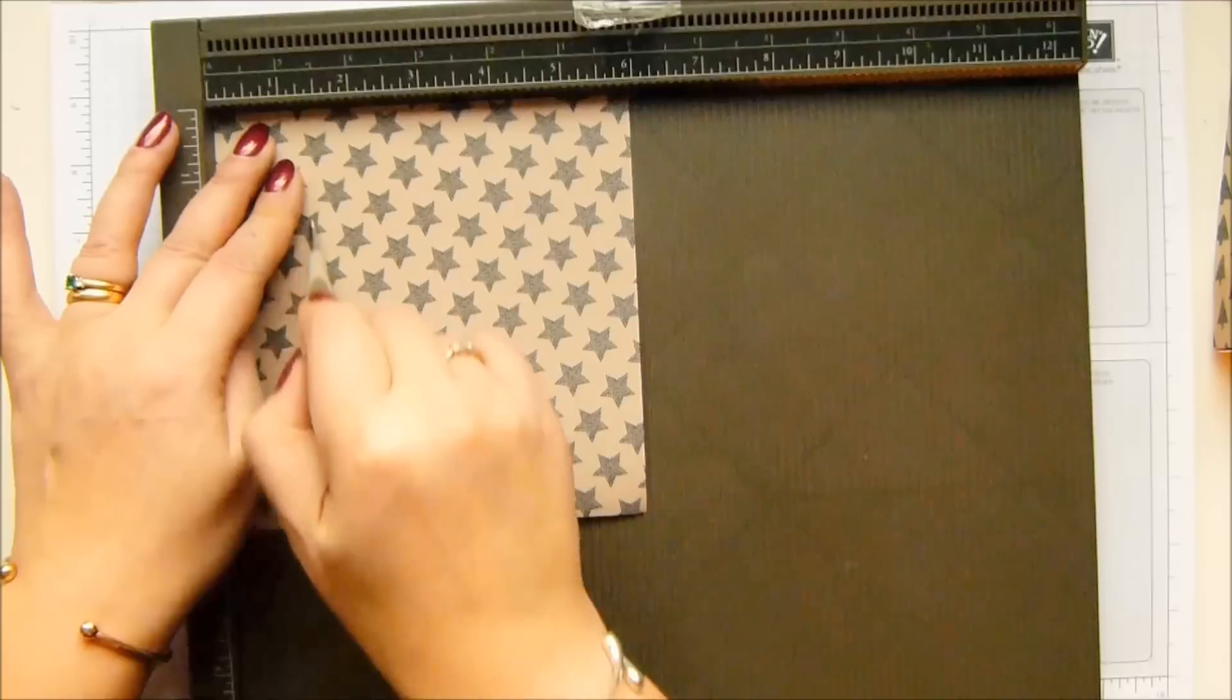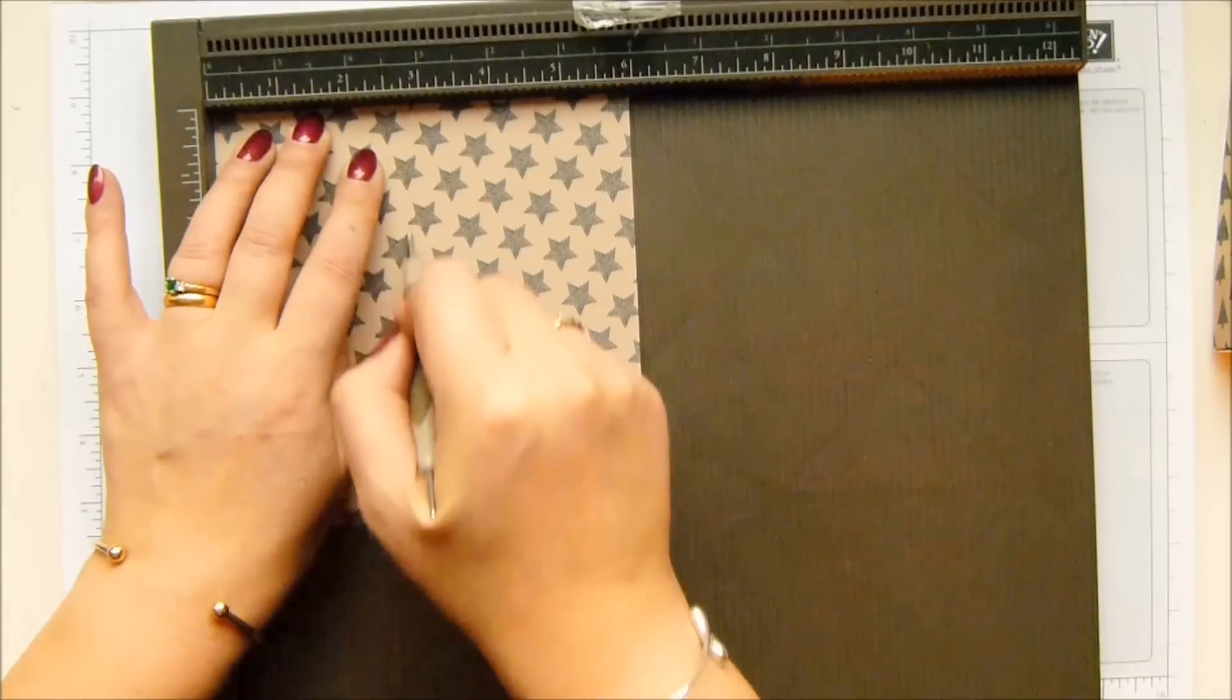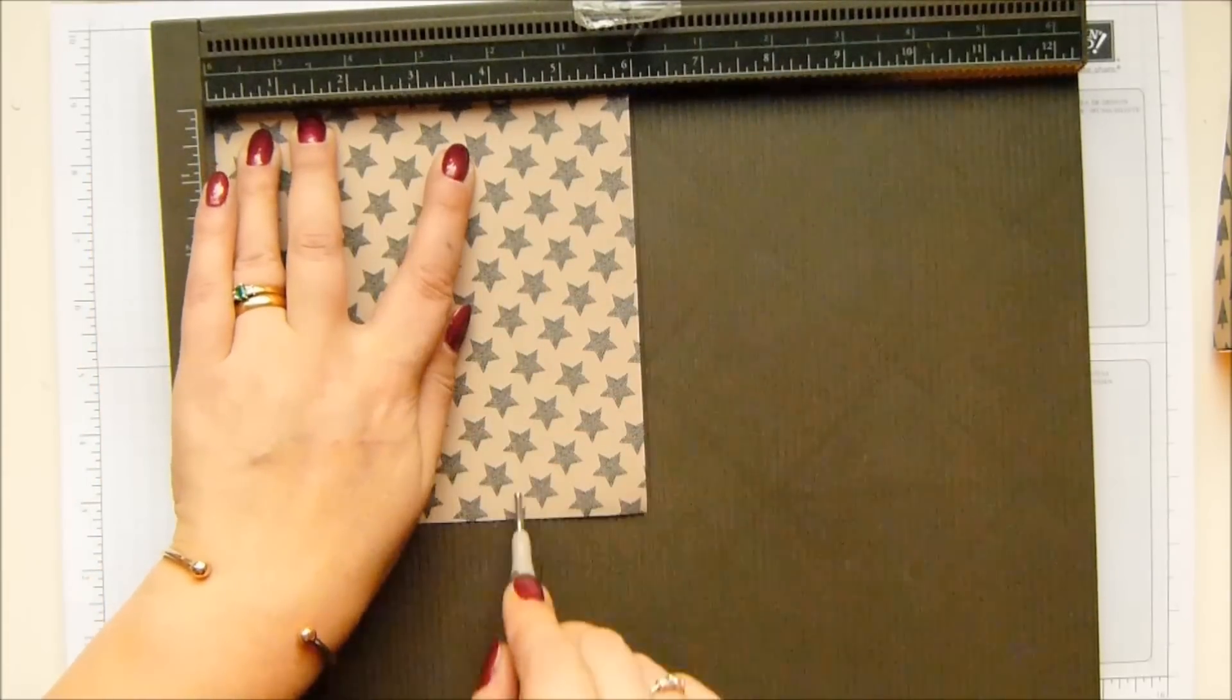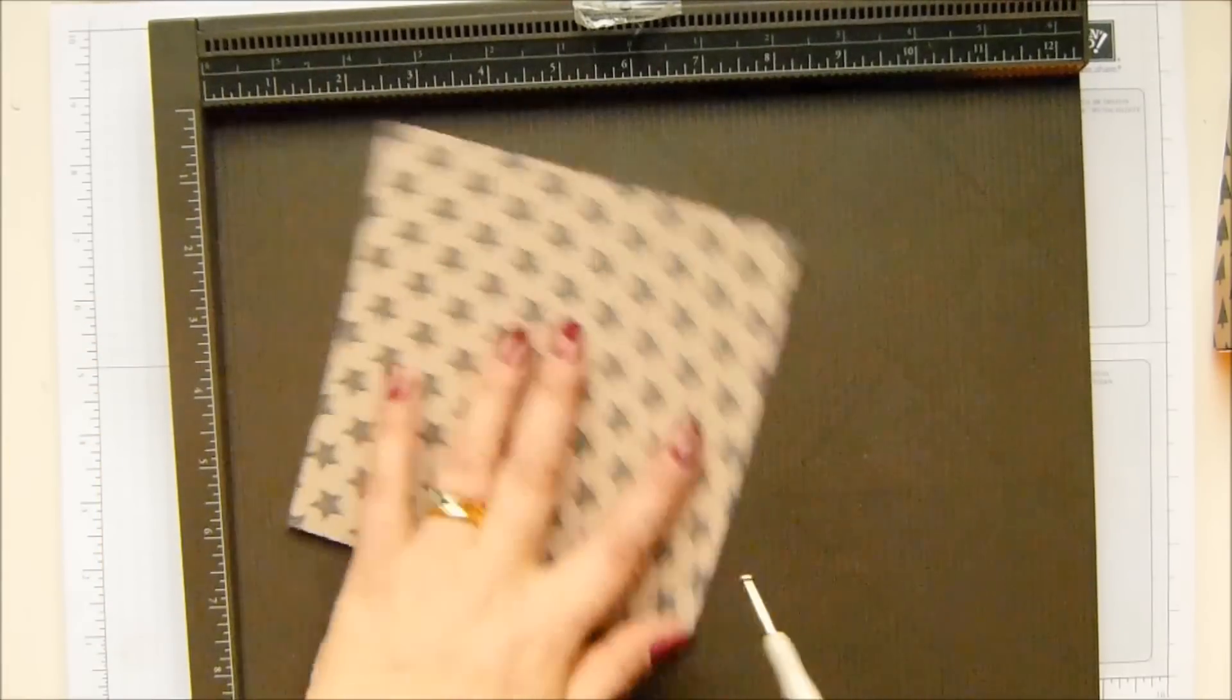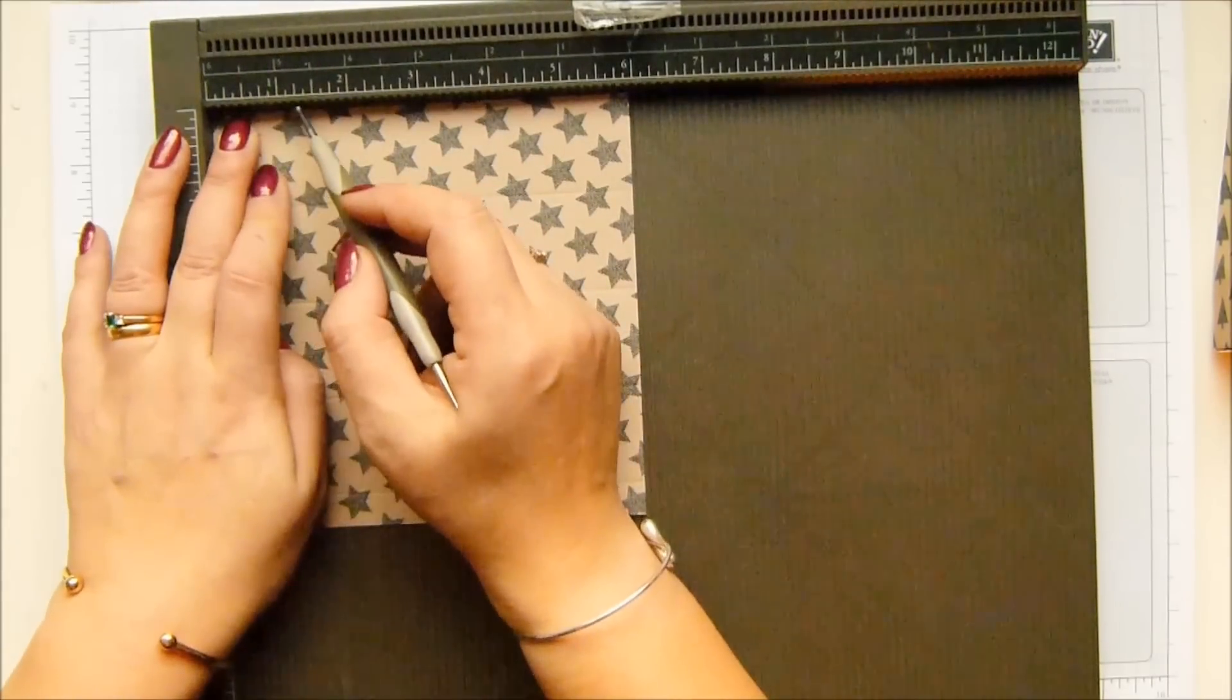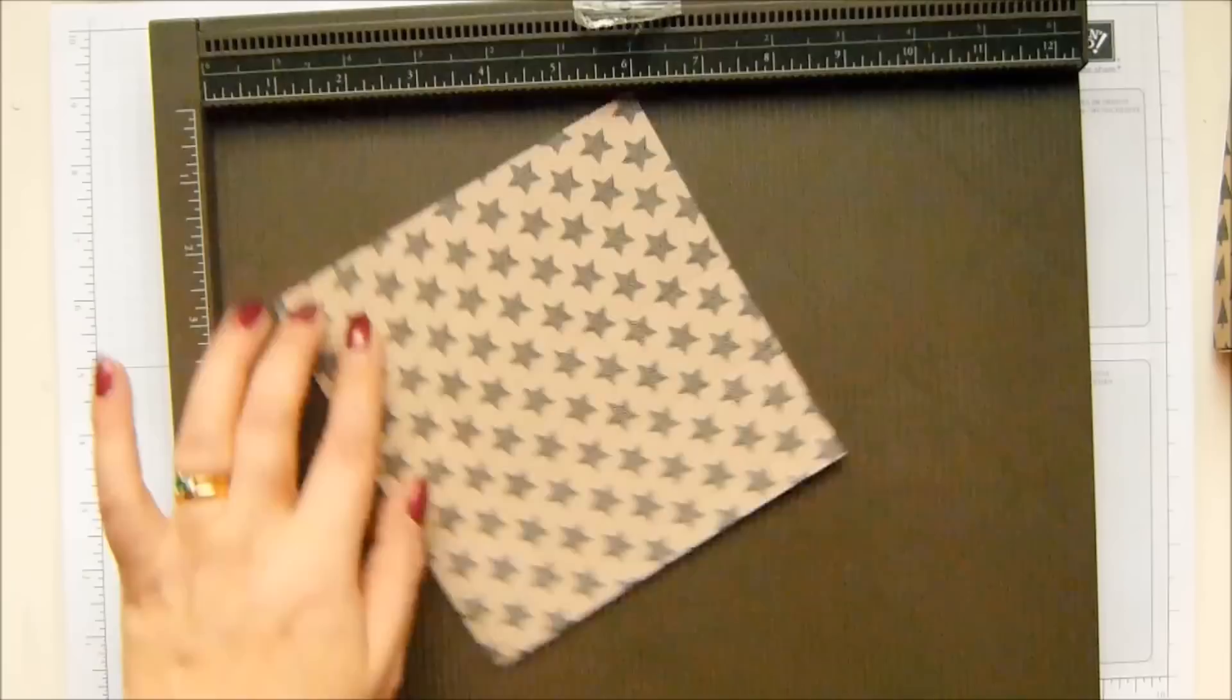And then we're going to score it at one and three eighths, two and three quarters, four and one eighth and five and a half inches, which in metric three and a half, seven, ten and a half and fourteen. Whiz it round, score it at one and three eighths of an inch, which is three and a half centimeters. Such a quick and easy project.